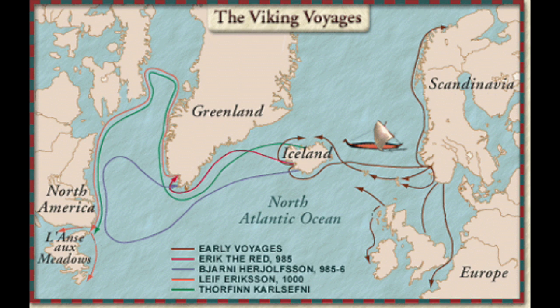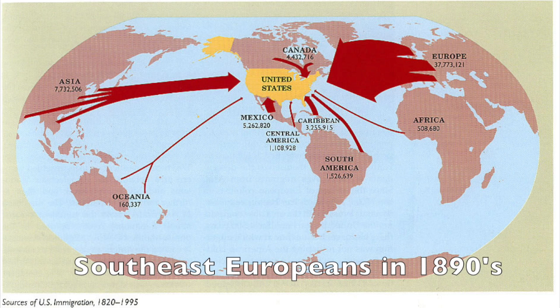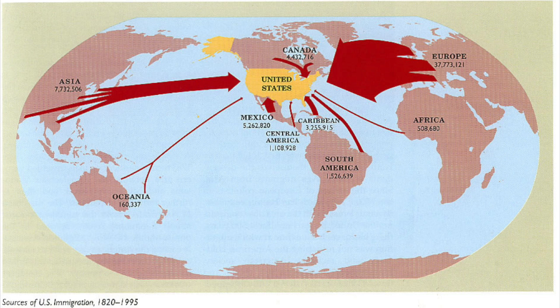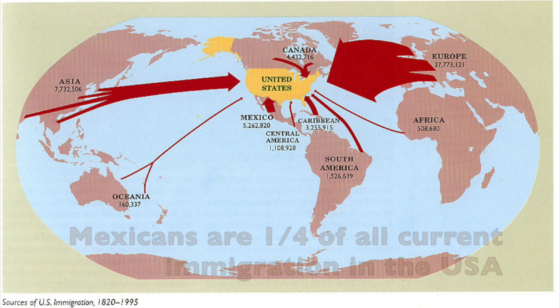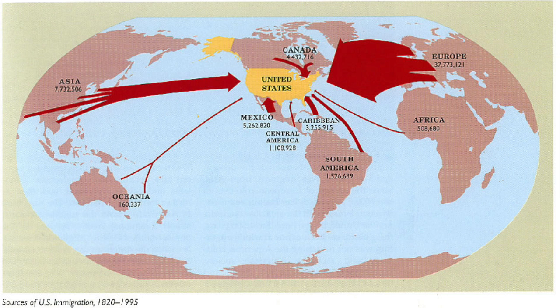The first people to actually write about this new world were the Spanish, and then came the rest of the conquering Europeans like the French, the English, and the Dutch. Wave after wave of immigration lasted through the history of the United States, most notably with the Irish in the 1840s, the Chinese in the 1850s, and finally the Southern and Eastern European influx of Jews and Catholics from countries like Italy, Poland, Russia, and the Balkans. In the last 50 years, the most immigration has come from neighboring countries in North America, most notably Mexico, with one quarter of the total immigrant population of 47 million being from Mexico.